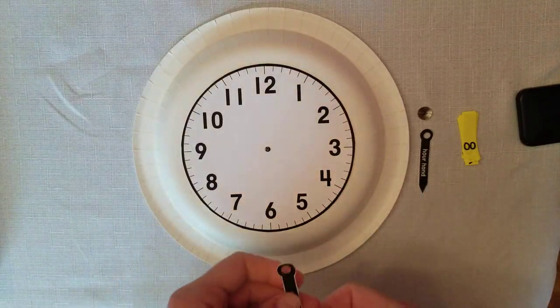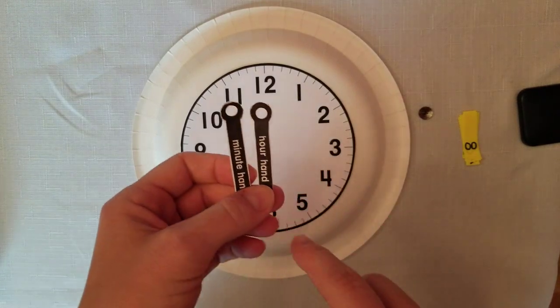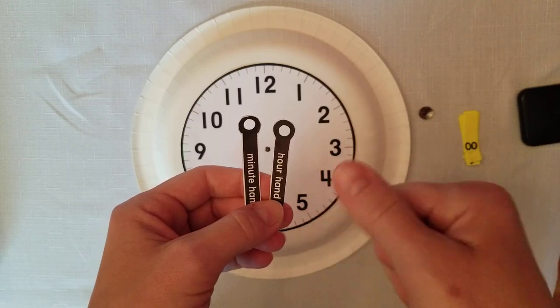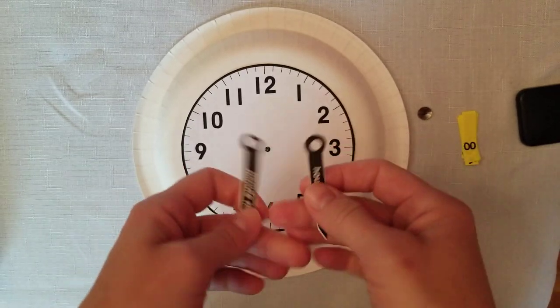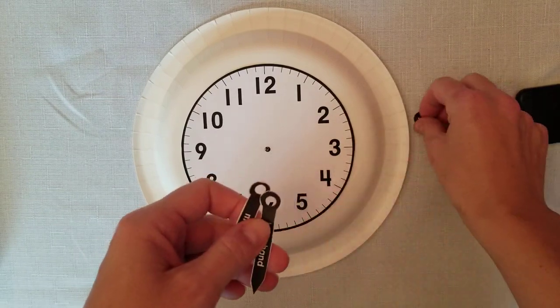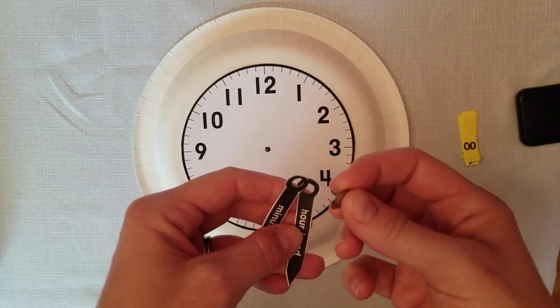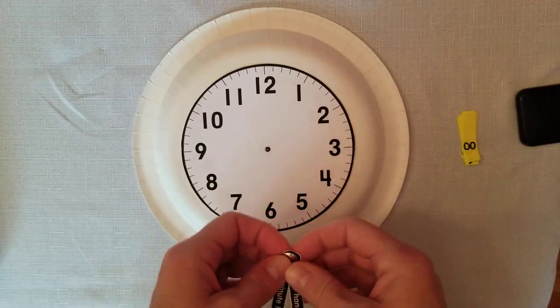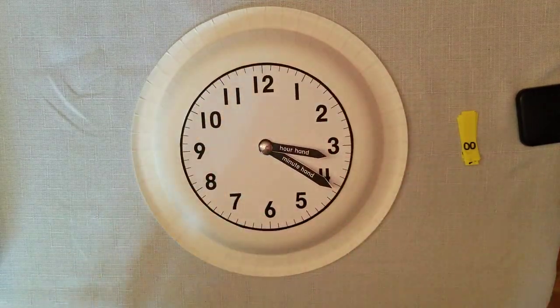I took my hour and minute hands and used a hole puncher to punch the holes so they'll have plenty of room to wiggle around. At first I tried just sticking my thumbtack through it, and it didn't work so well. I took my thumbtack and went through the hour hand, through the minute hand, and then poked it right into the middle there.